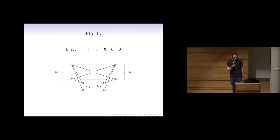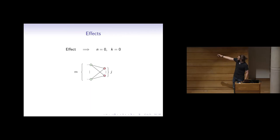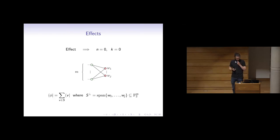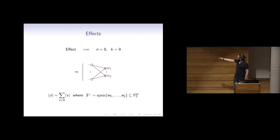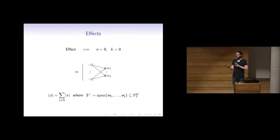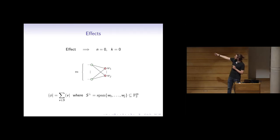Effects are very similar — an effect is just something with no outputs. So I get something with a bunch of green dots connected to a bunch of red dots, which is just the adjoint. What this actually describes is a set of linear equations. These vectors W1 to Wj are a spanning set not for the space S itself, but for S-perp. Giving a spanning set for the perp of a space is like giving a set of linear equations which describe a linear subspace. So you always have these dual pictures in the phase-free ZX calculus: you can describe a subspace by giving a basis for the space itself — the green-red form — or for its perp — the red-green form.